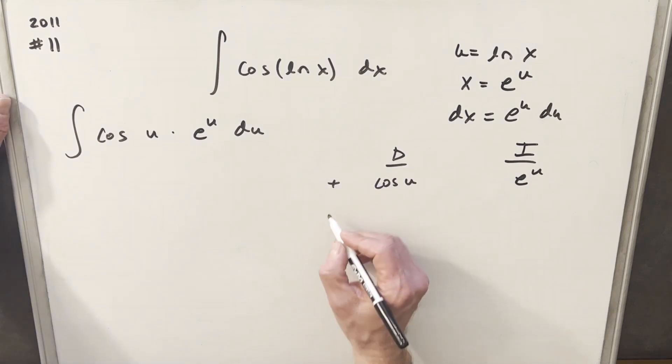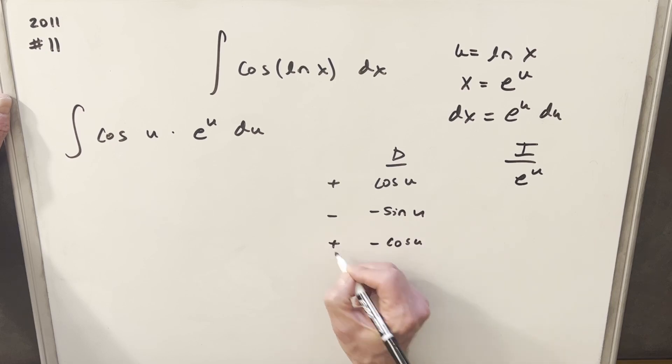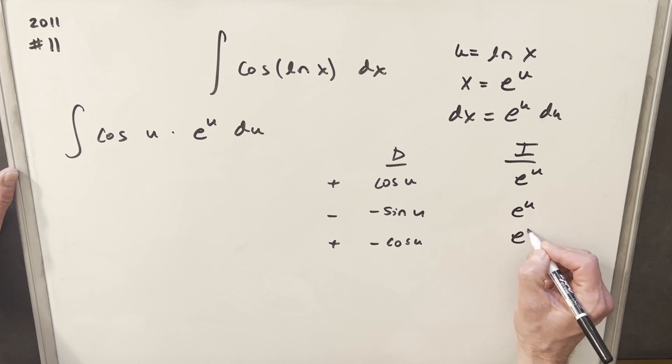Then we'll differentiate over here and we'll get derivative of cosine u is going to be minus sine u. And then taking another derivative here, this is going to be minus cosine u. Then the integral of e to the u, this is really simple because it's always e to the u, so we can just do that real quick.